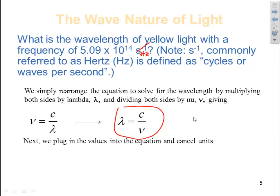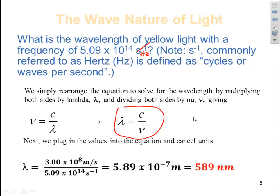Next, we plug in the values into the equation and cancel units. Lambda equals 3.00 times 10 to the 8th meters per second divided by 5.09 times 10 to the 14th hertz, or seconds minus 1. That comes out to 5.89 times 10 to the minus 7th meters. When we talk in wavelengths, we often use nanometers, so we convert that and get our final answer, which is 589 nanometers.